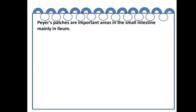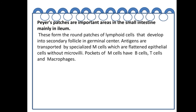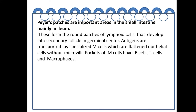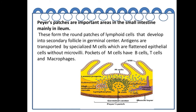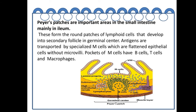Peyer's patches are very important areas in the small intestine, mainly in the ileum. They form round patches of lymphoid cells that develop into secondary follicles in germinal centers. Antigens are transported by specialized M cells, which are flattened epithelial cells without microvilli. Pockets of M cells contain B cells, T cells, and macrophages. As shown in the diagram, M cells lie in the epithelial layer of the ileum, with germinal centers bearing B cells, lymphocytes, and T cells below them, forming Peyer's patches.